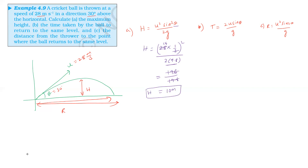Time of flight. The formula is T = 2u sinθ / g. Substituting: 2 into u, which is 28, into sin 30 divided by g, which is 9.8. The twos cancel, giving 28 divided by 9.8, which is approximately 2.9 seconds.